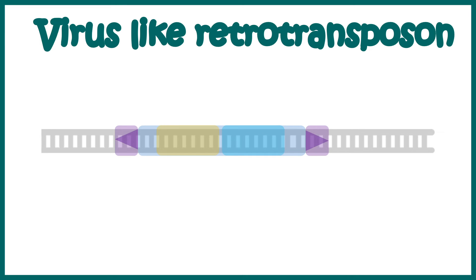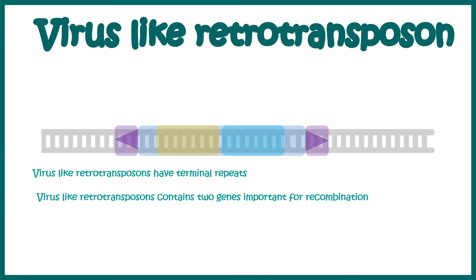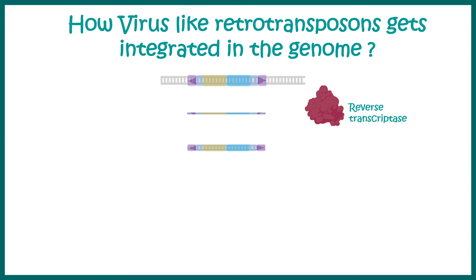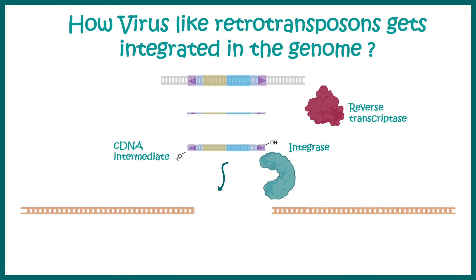Now let's talk about virus-like retrotransposons. These have inverted terminal repeats as usual, but at the same time they have two genes encoding for reverse transcriptase and integrase, and both of these are important for their function. First, the transposon would be transcribed, and reverse transcriptase would make a copy of that, forming a cDNA-like structure. This cDNA intermediate would then be integrated into a new location with the help of the enzyme integrase, and thereby the virus-like retrotransposons get into a new genomic location.